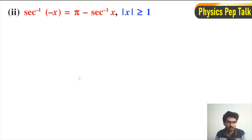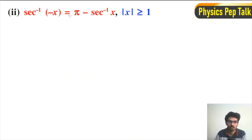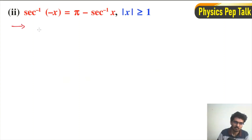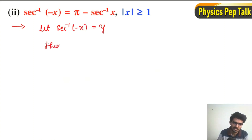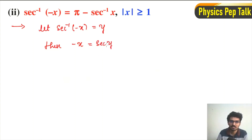For the second one, sec⁻¹(-x) = π - sec⁻¹(x), for |x| ≥ 1. Let sec⁻¹(-x) = y. Then this can be written as -x = sec(y). Shifting the negative sign to the right-hand side, x = -sec(y).